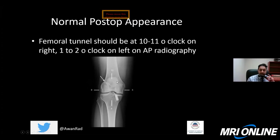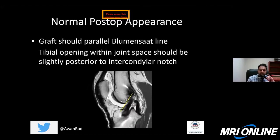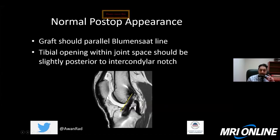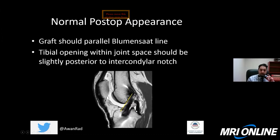The graft should really parallel Blumensaat's line — the slope of the intercondylar notch on the lateral x-ray or sagittal view. The graft will be parallel to Blumensaat's line, just posterior to it. If the graft becomes too vertical, that becomes a problem and could indicate impingement or other abnormalities. You want to make sure the graft is perpendicular to Blumensaat's line. The tibial opening of the tunnel should be just posterior to the intercondylar notch in a normal case.